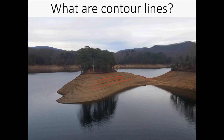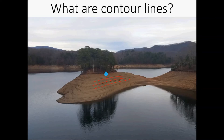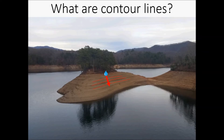Another way to think about contour lines is how water would flow when it rains. Water will flow perpendicular to contour lines in the direction of the maximum slope. I've added a few contour lines to this image, showing areas of equal elevation. If a drop of water fell in the area where I drew the contour lines, it will flow in the path of least resistance, which will be directly downhill. The red arrow represents the direction of flow, which is perpendicular to the contour lines.